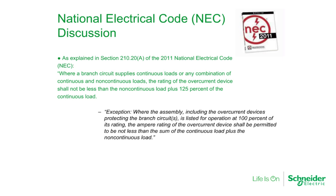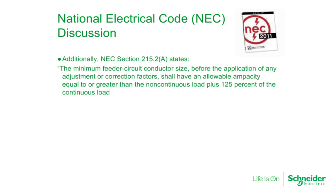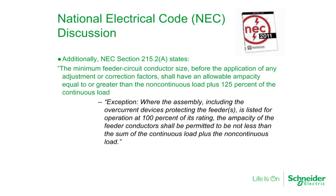UL specifies tests that must be conducted to obtain listings for continuous operation at 100% of the rated current. Additionally, another section from the National Electrical Code discusses the minimum feeder circuit conductor size. A standard 80% rated breaker and the equipment it is installed in and the connection wires have to be rated at the non-continuous load plus 125% of the continuous load. In contrast, a 100% tested and rated circuit breaker and equipment can carry 100% of the sum of the continuous and non-continuous loads.